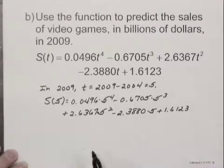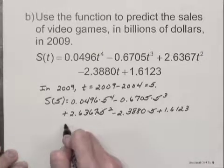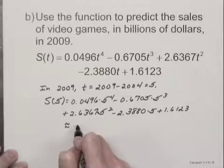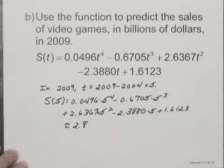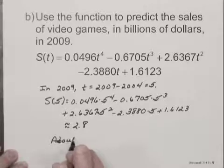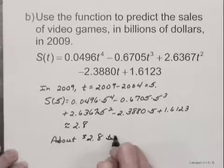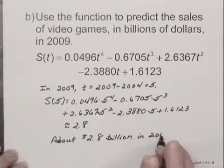When we would use a calculator to do these calculations, we would find that this is approximately equal to 2.8. So we would say that the estimate for the sales of video games in 2009 would be about $2.8 billion. And this is in the year 2009.